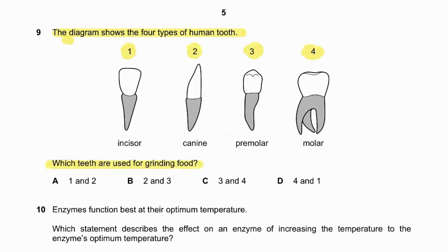Question number nine: the diagram shows four types of human tooth — incisors, canines, premolars, and molars. Which teeth are used for grinding food? For grinding food we use teeth three and four — premolars and molars — because the surface area they provide allows perfect grinding. Incisors and canines are used for cutting and shearing.